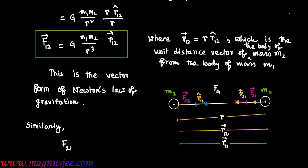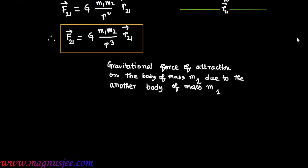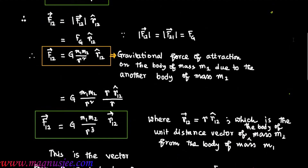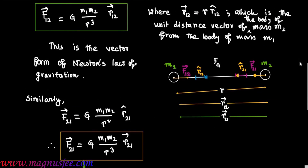Similarly, vector F21 = G·m1·m2 / r² · r21 cap, where r21 cap is the unit distance vector. Therefore, vector F21 = G·m1·m2 / r³ · vector r21. This is the expression of gravitational force of attraction experienced by the body of mass m2.